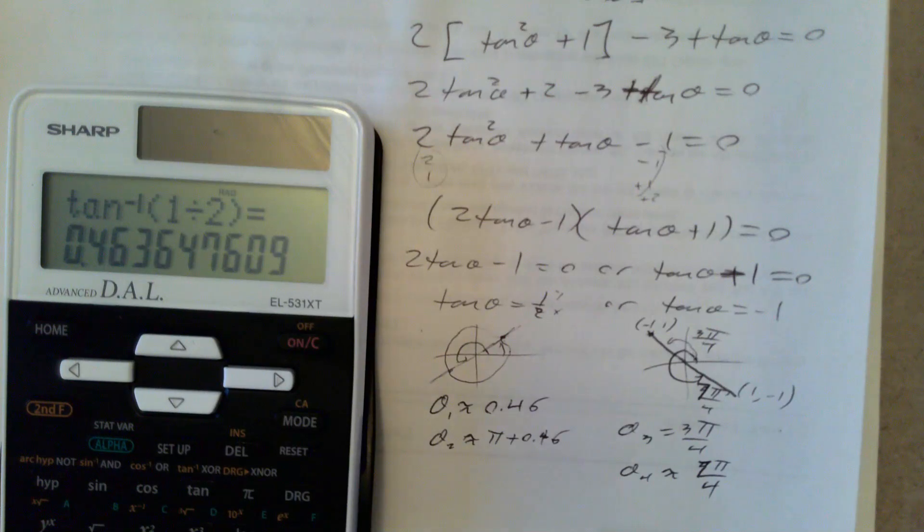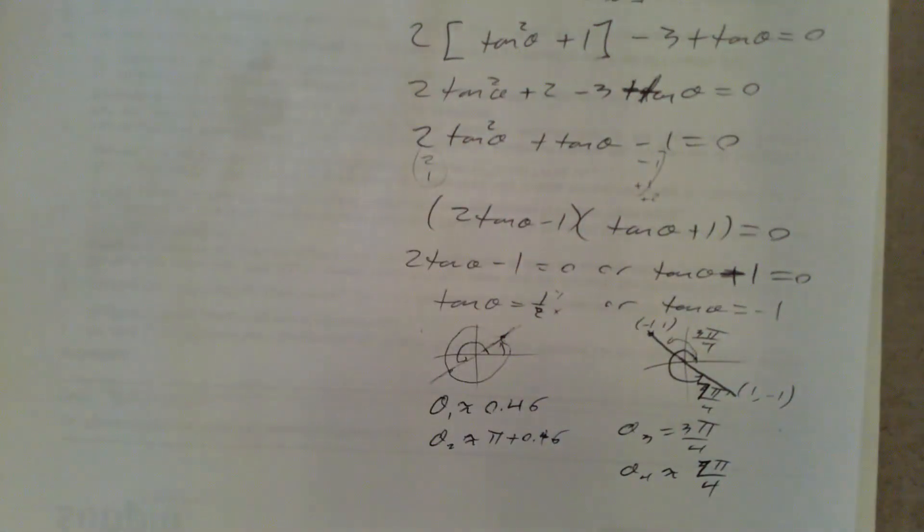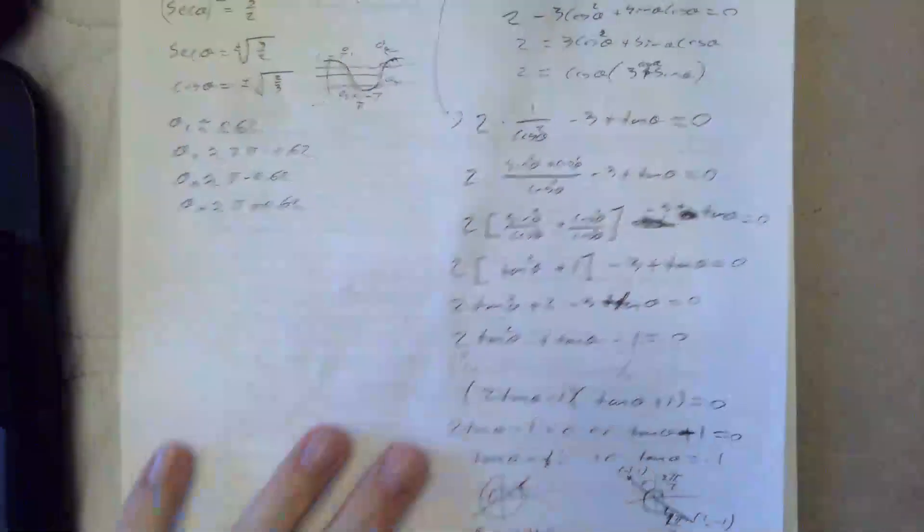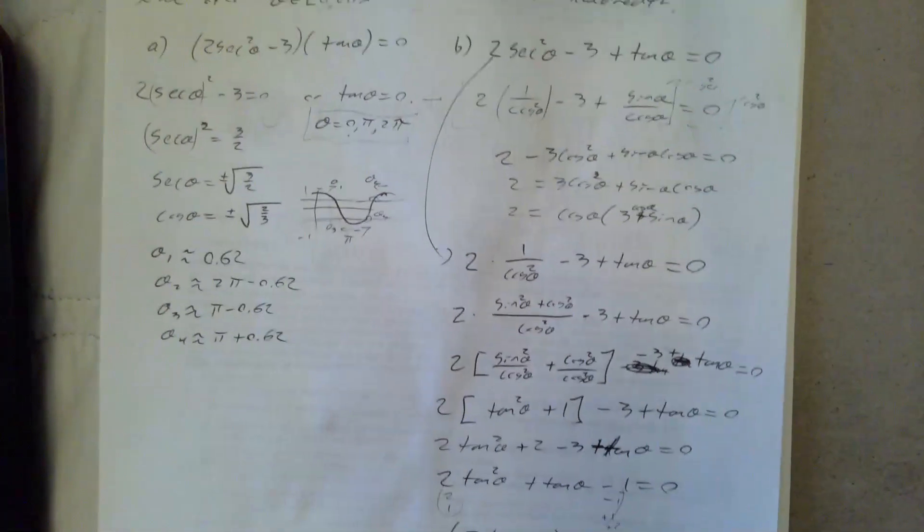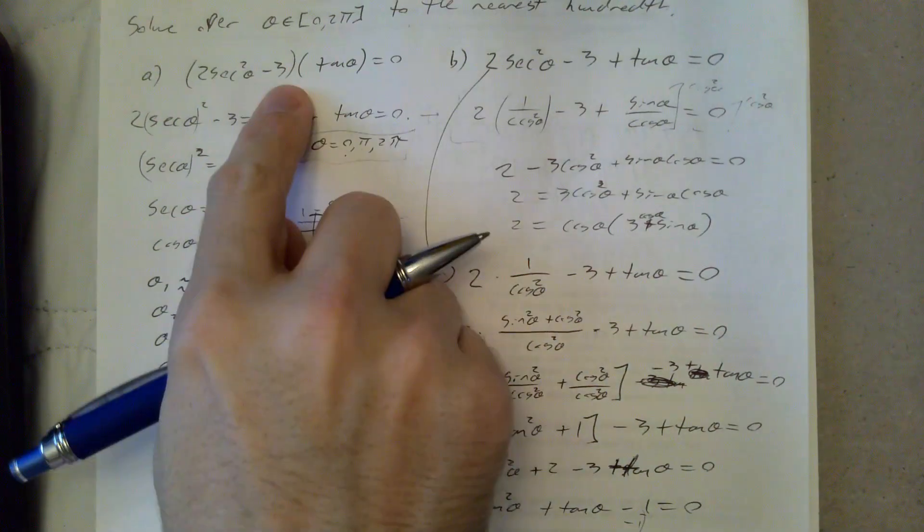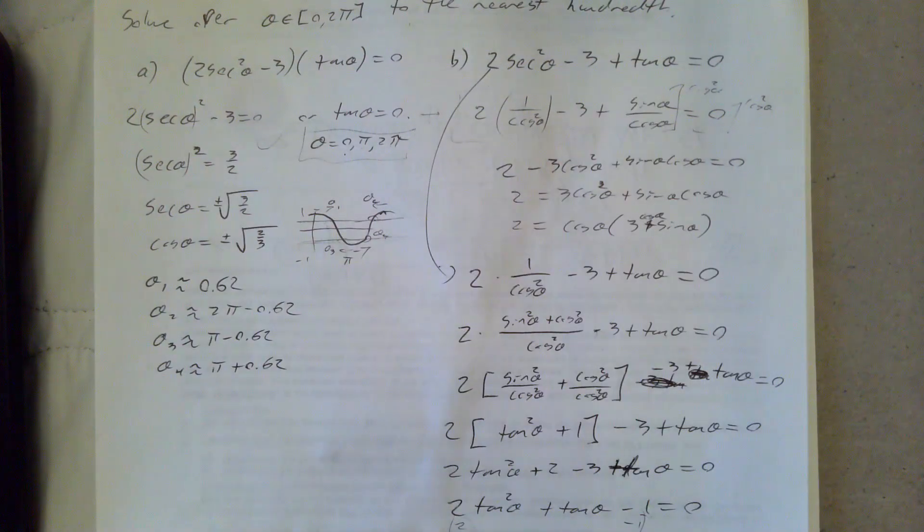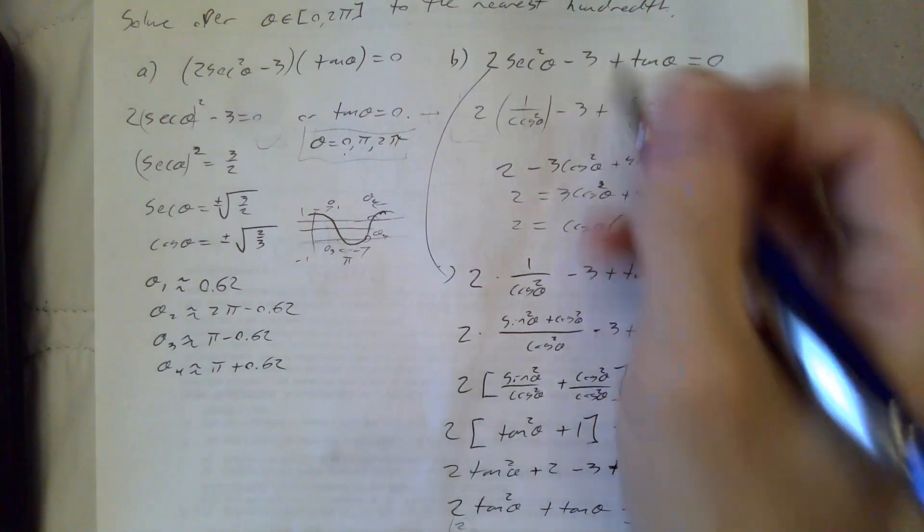Let's see if we can zoom out and keep the focus. Two similar equations. Totally different approach, depending on if there's a product or a sum. Make sure we understand. And as promised, the identity for the secant of theta squared.